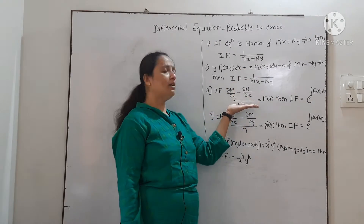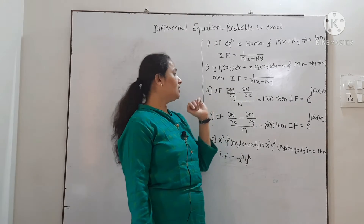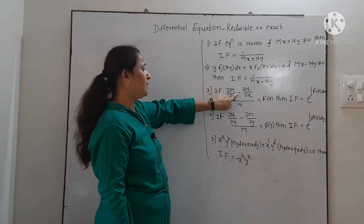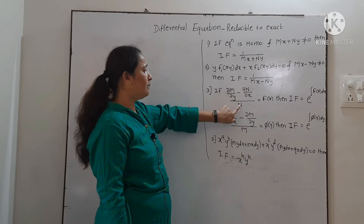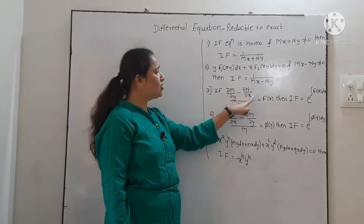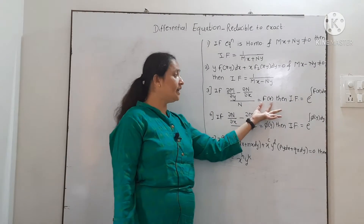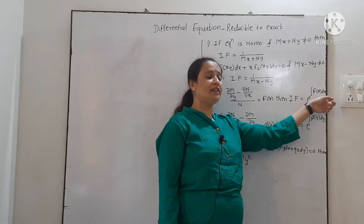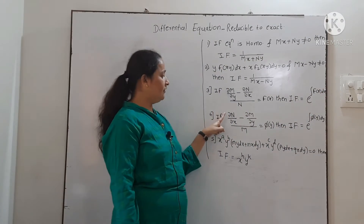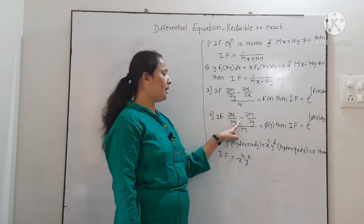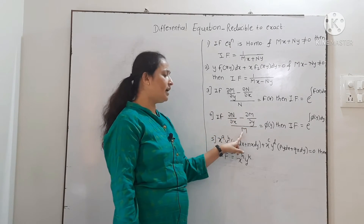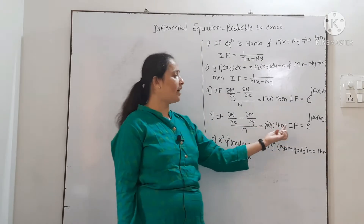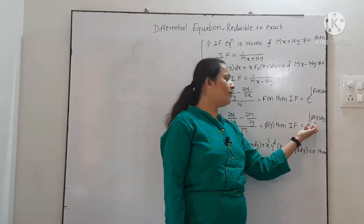If the second rule is not applicable, we will check the third rule. In the third rule, we find the value of ∂M/∂y minus ∂N/∂x upon N. This should be a function of x only, then the integrating factor will be e raised to integral f(x) dx. Fourth rule is: ∂N/∂x minus ∂M/∂y upon M — this should be a function of y only — then the integrating factor is e raised to integral φ(y) dy.